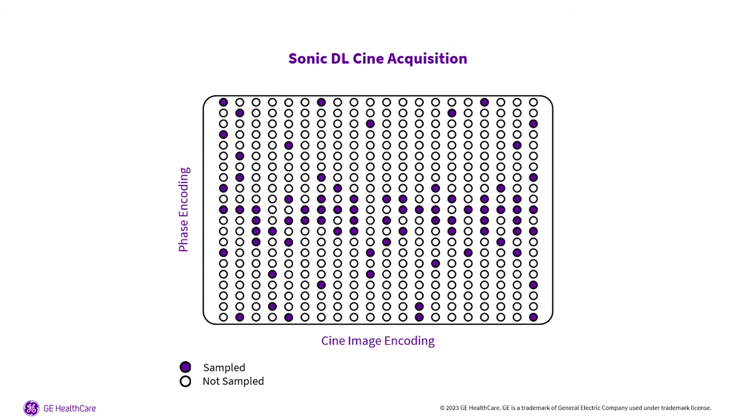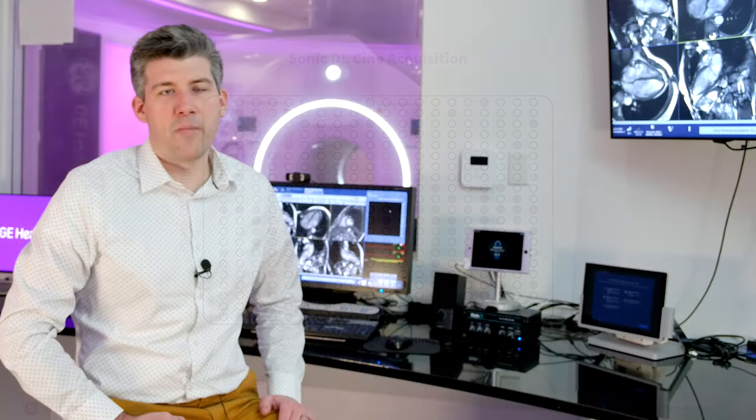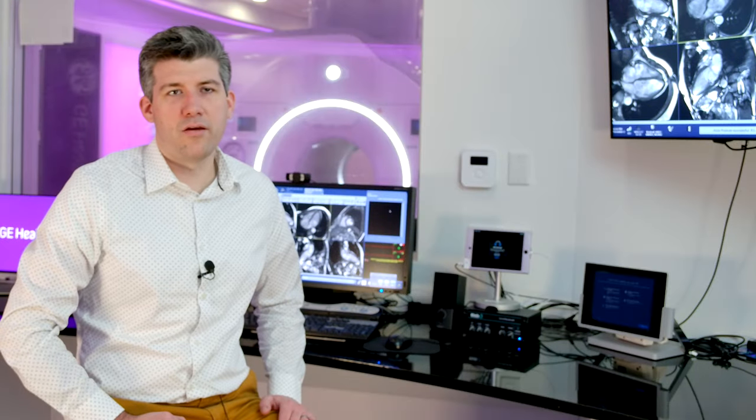Sonic DL Cine acquires dynamic images during the cardiac cycle, allowing us to leverage signal correlations in both space and time during reconstruction, ultimately providing high fidelity images from a minimal amount of data.